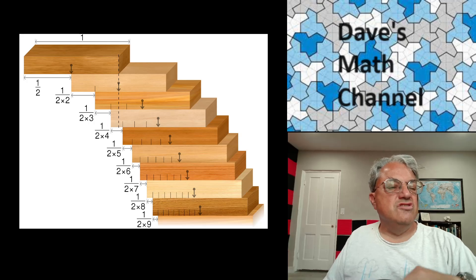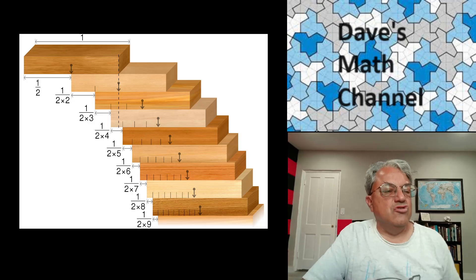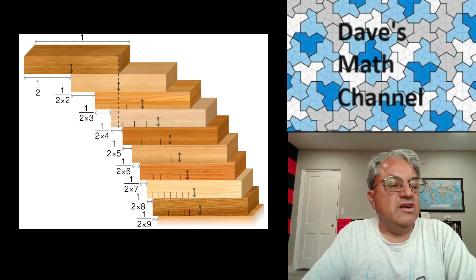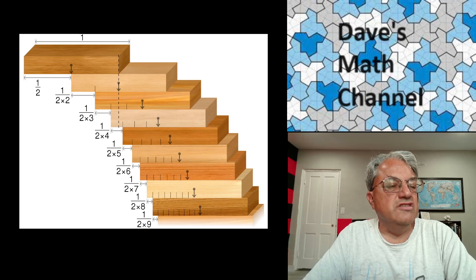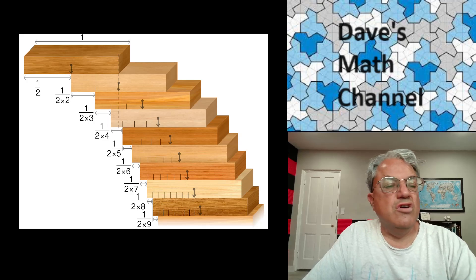So in order to ensure that the center of mass of the top block stays over the second block, the farthest you can overhang it is half a block length, right? Because once it's half a block length, then the edge of the second one is aligned with the center of the first one.